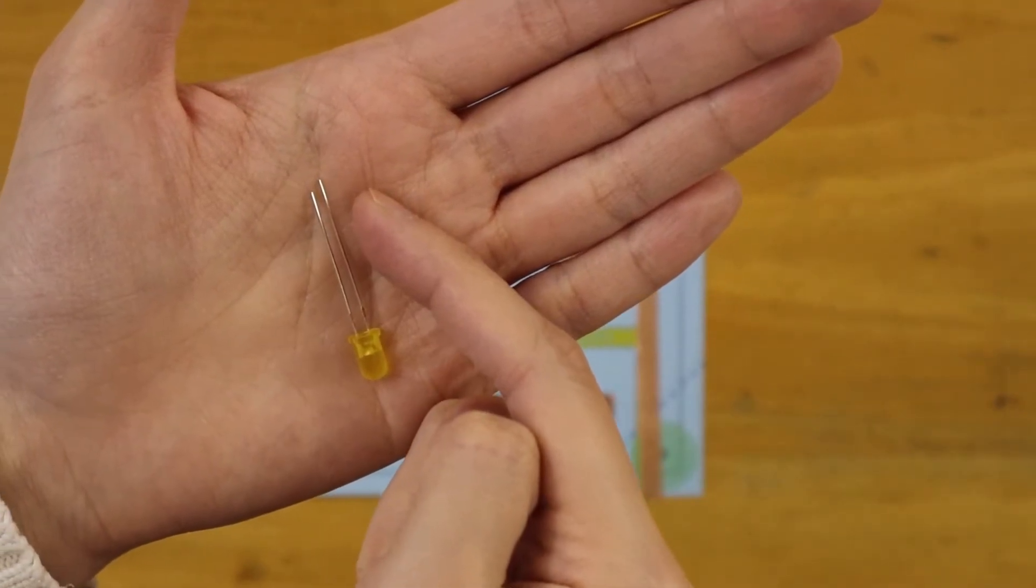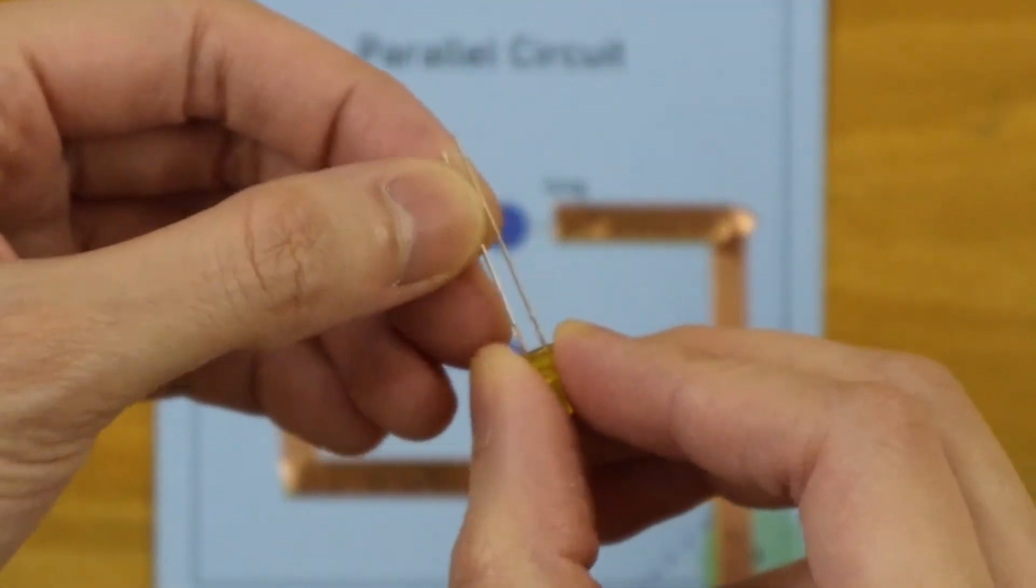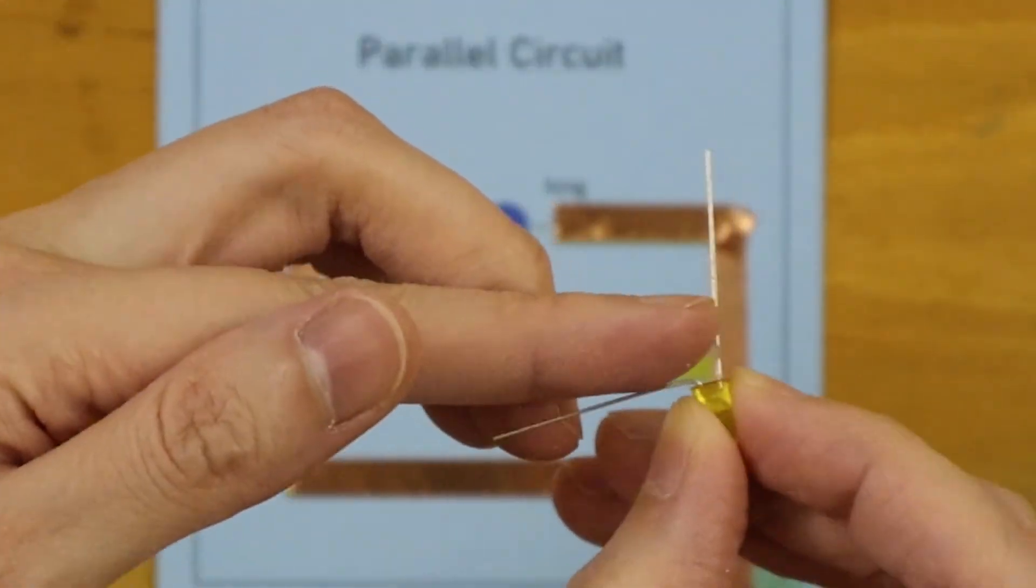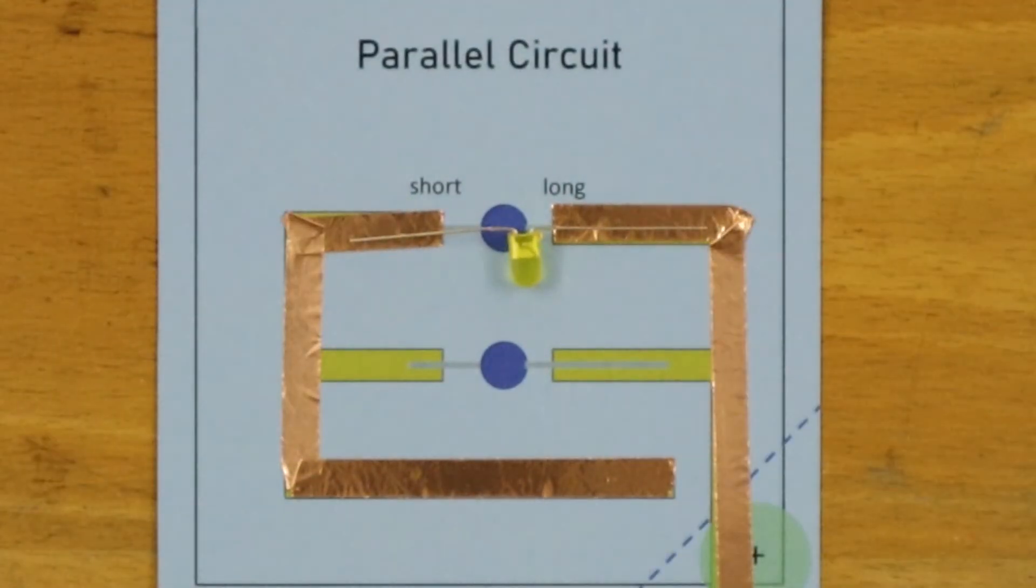An LED has a long leg and a short leg. The longer leg is the positive side and the shorter leg is the negative side. The positive side of the LED connects to the positive terminal of the battery.